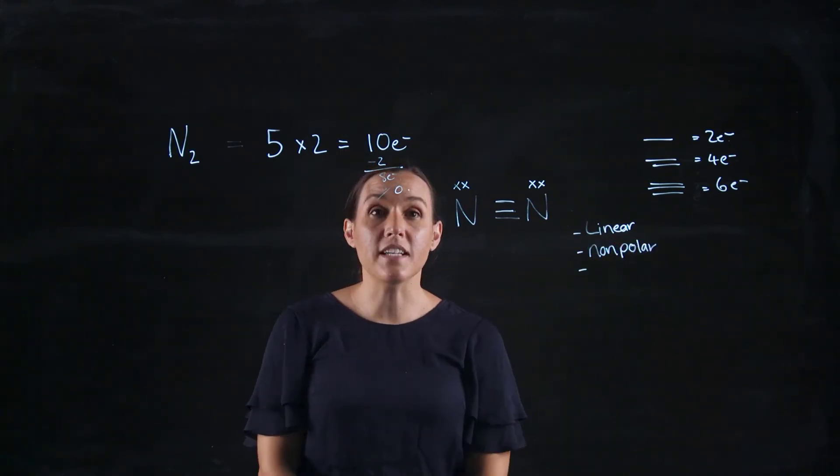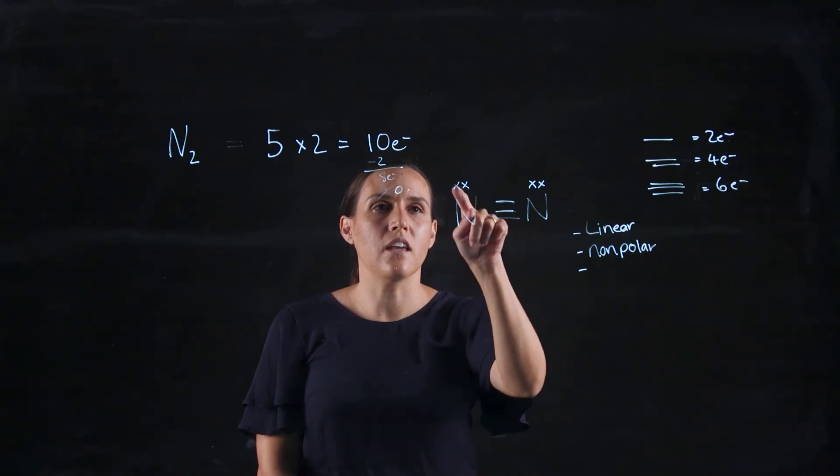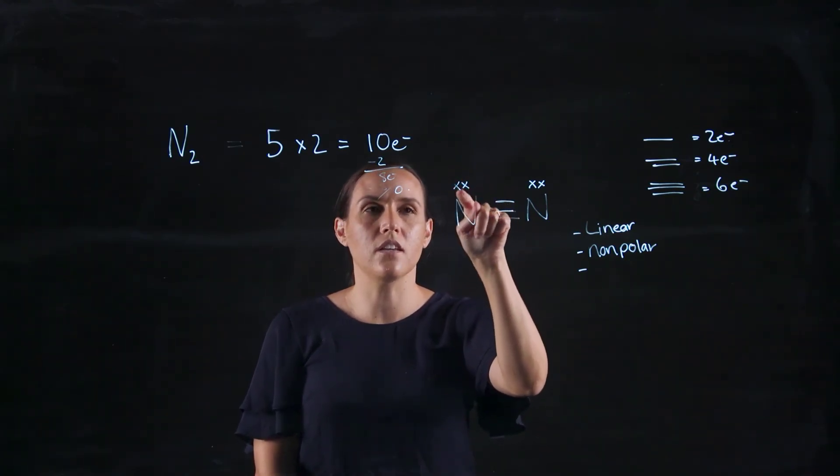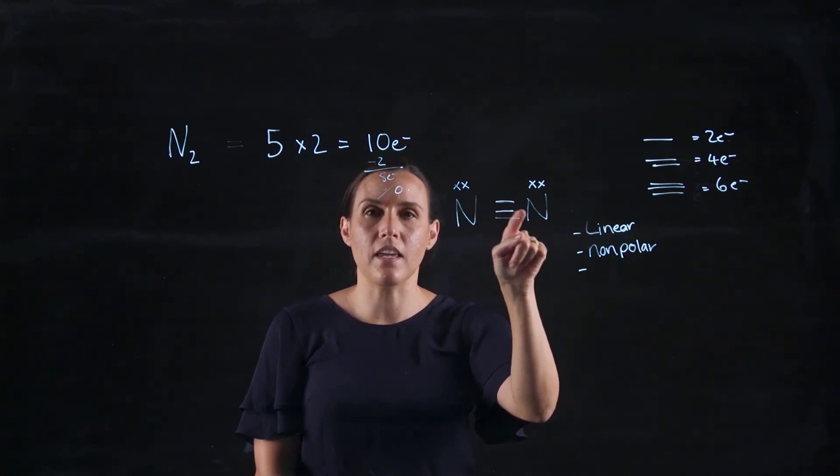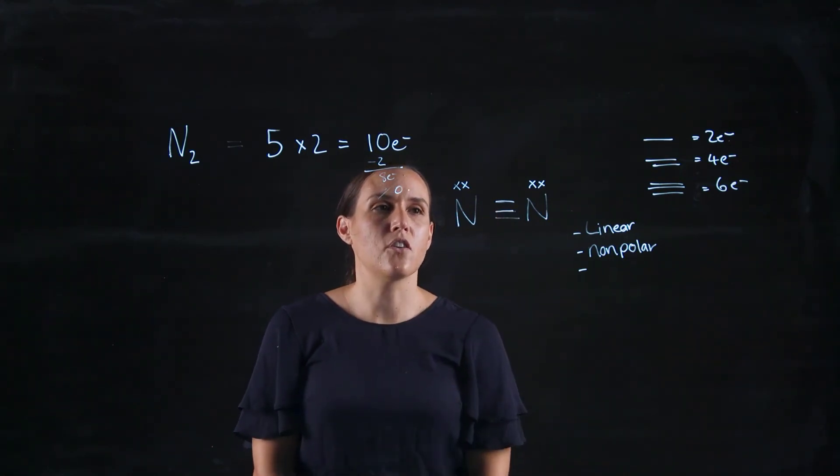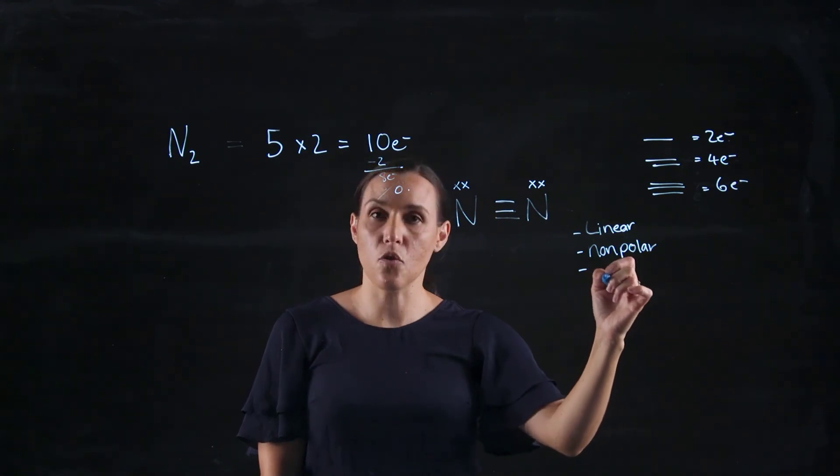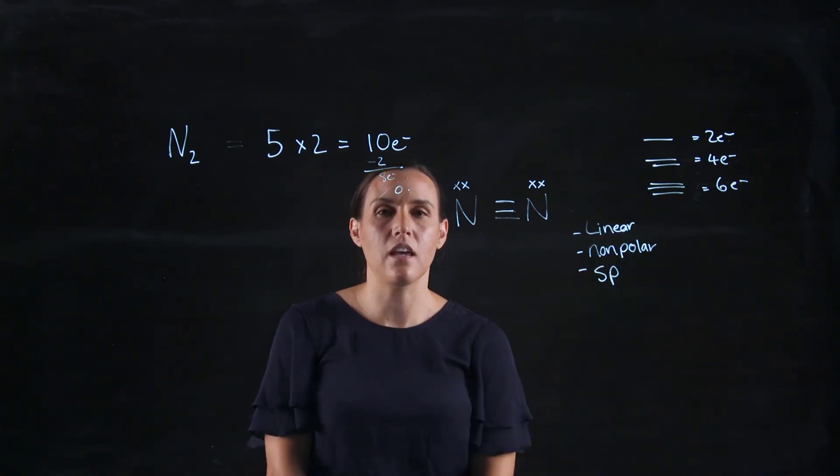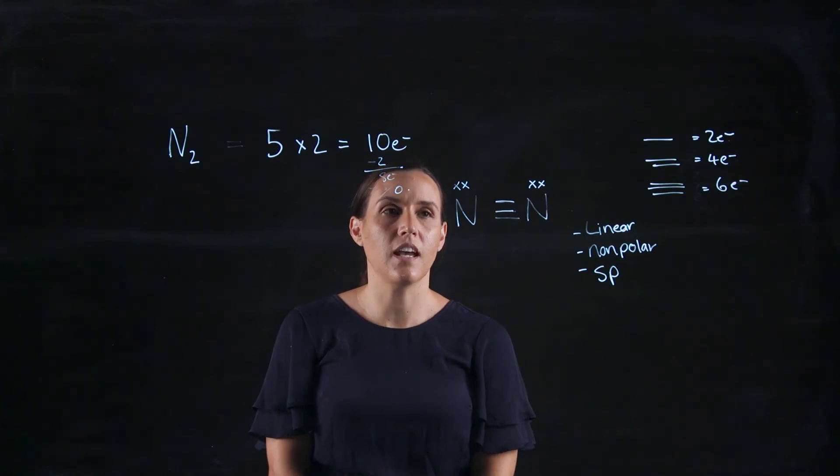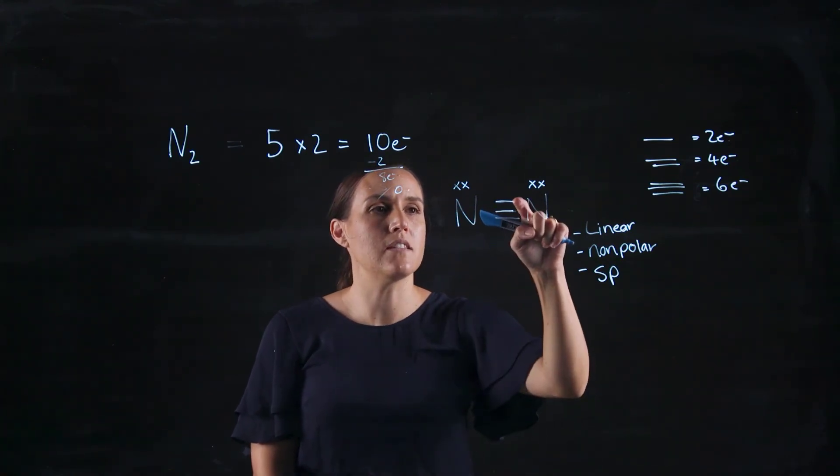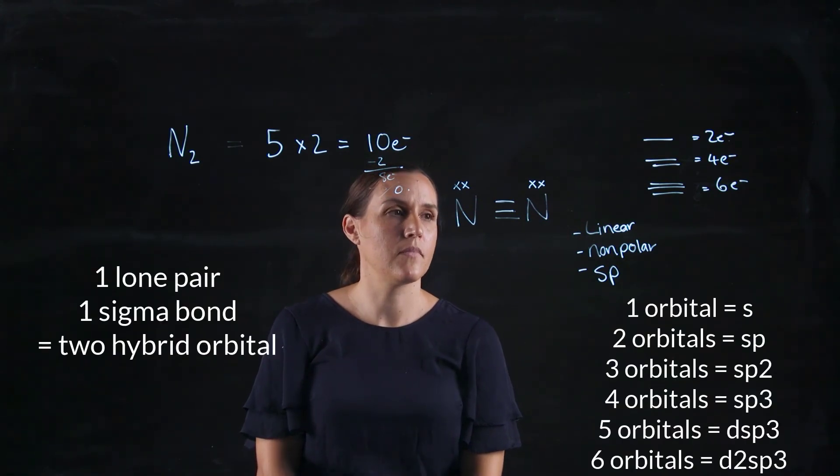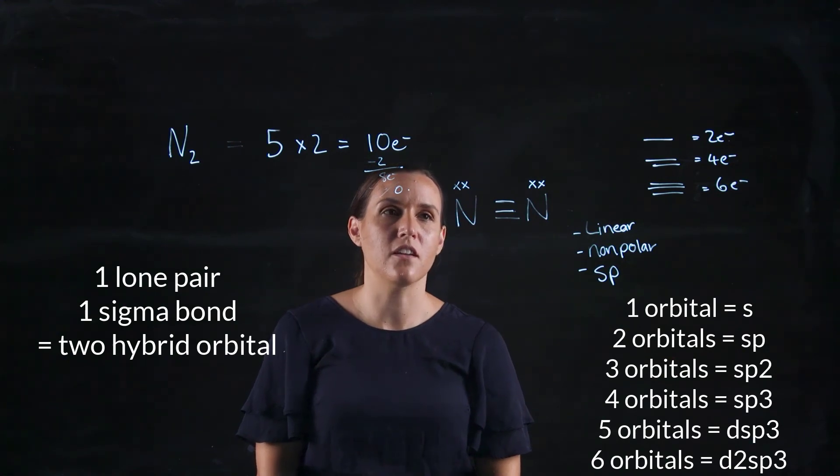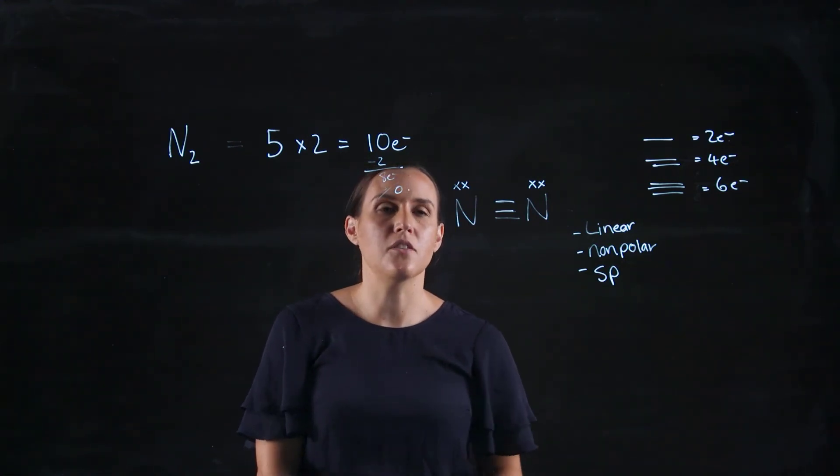And the hybridization now. So we've got an orbital that's holding the two lone pairs, and we've got one orbital that's making a sigma bond. So it would be needing two orbitals, so it's an sp hybridization. And then it's got two P's to have the double and triple bond sitting in. So that's our shape, our polarity, and our hybridization of N2. Let's have a look at BCl2.